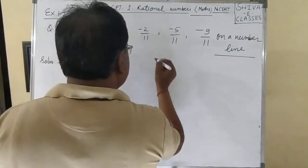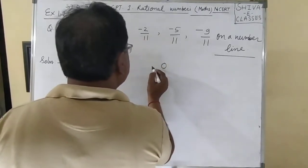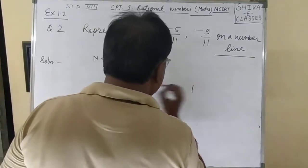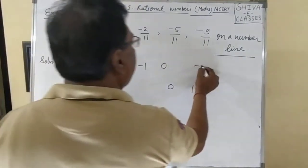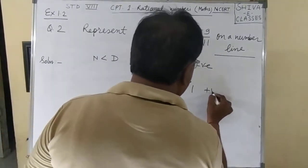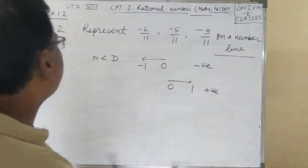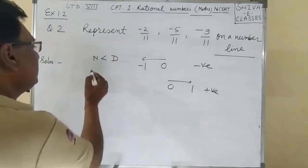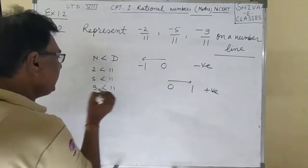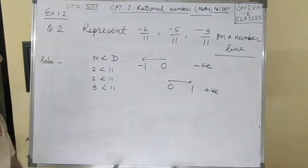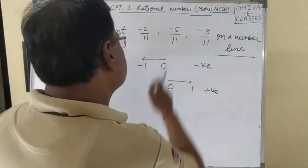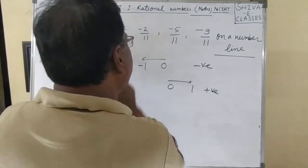It means the number lies between 0, -1 and 0, 1. If negative, then the number is -1 to 0, and if positive, then the number is 0 to 1. The numerator 2 is less than 11, 5 is less than 11, 9 is less than 11. All numerators are less than the denominator, and the number is negative, so the number lies between 0 and -1.